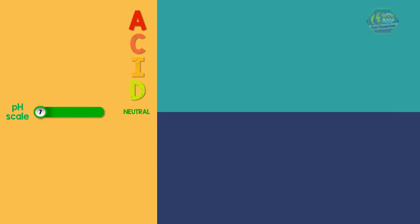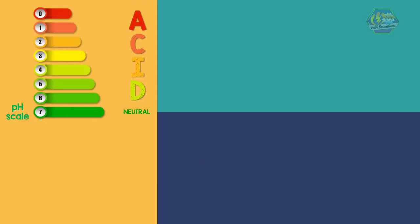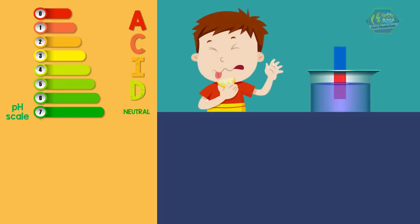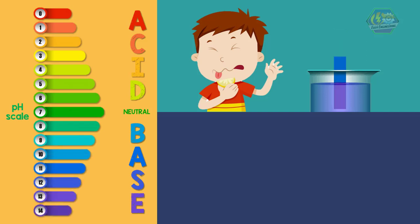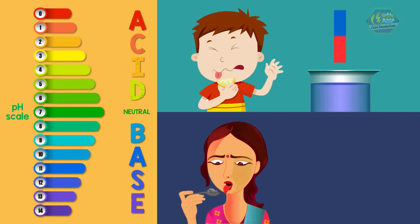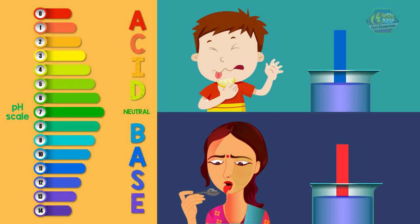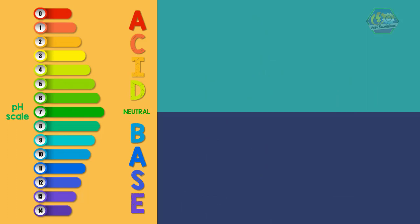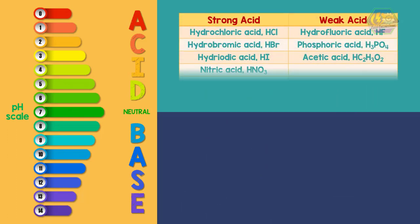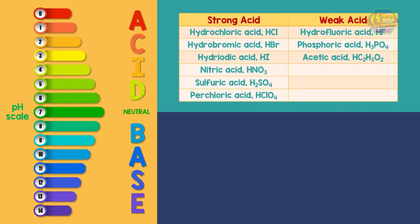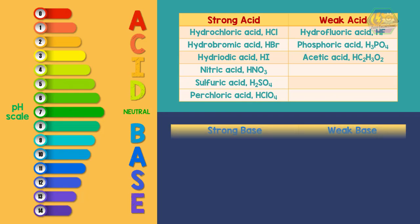Acids possess some characteristics: the pH is less than 7, the taste is sour, and they turn blue litmus paper red. Bases have a pH greater than 7, a bitter taste, and turn red litmus paper blue. Table 1 shows some common examples of strong and weak acids, and Table 2 shows some common examples of strong and weak bases.